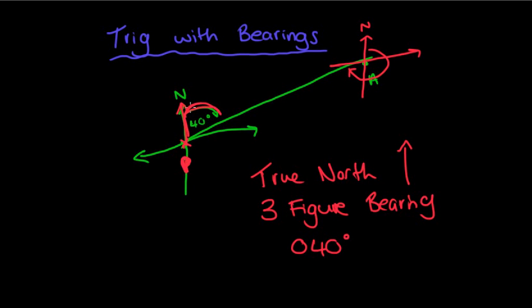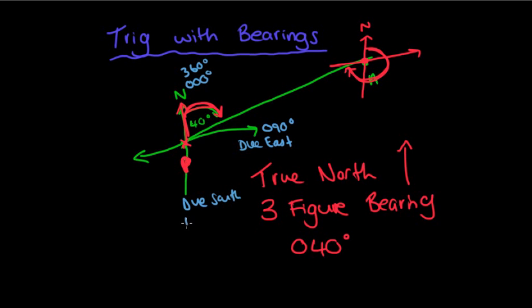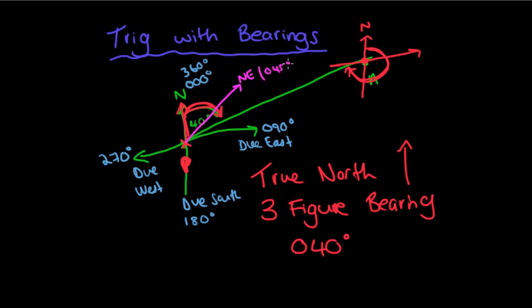Then we turn in a clockwise direction, starting from zero degrees. North has two bearings: 000 degrees or 360 degrees. Due east has the bearing of 090 degrees. Due south has a bearing of 180 degrees. Due west — add another 90 — we get 270 degrees. Also important to note: exactly northeast is on a bearing of 45 degrees.